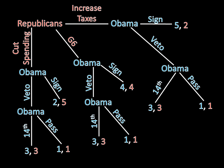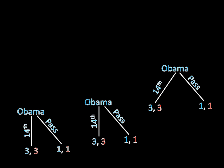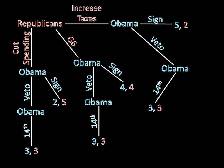This is a game of complete information, so we can use backward induction to solve it. We start with what happens if Obama vetoes a bill. We see that the 14th Amendment gets a payoff of three, while passing and watching the United States go bankrupt gets a payoff of one. Since three is greater than one, Obama would choose to go with the 14th Amendment option rather than watch the United States go bankrupt. That means we can erase the pass option and simplify the game, making it easier to continue.